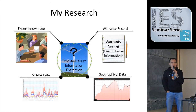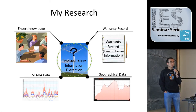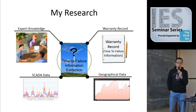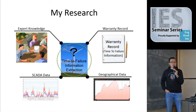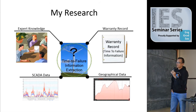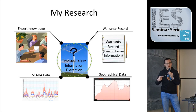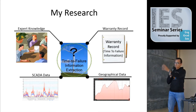What I'm trying to do is use all the information I can get through the process. This includes expert knowledge, which is the belief — what's your belief of the reliability of a certain component. Another thing is the warranty record, which is the direct time-to-failure information collected through the implementation of the turbine. Also the SCADA data, which includes turbulent intensity and average wind speed, because that's the data the company collects. And finally the geographical data — the location of the turbine — from which I try to understand the terrain slope from different directions to understand the inflow angle affecting the turbine's time-to-failure distribution.